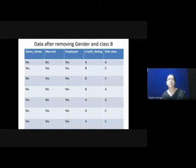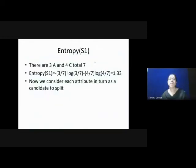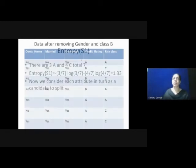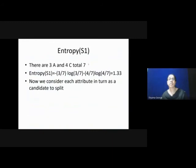The data after removing Gender and class B: class B is not included in the Risk class, and Gender is not included in the feature set. The remaining features are Ons, Married, Employed and Credit Rating, and the Risk class only contains class A and C. This data should be used to find out the next best split attribute. We will find out the entropy for this reduced data, which we consider as entropy S1. There are 3 records in class A and 4 records in class C, giving entropy S1 = minus 3/7 log₂(3/7) minus 4/7 log₂(4/7) = 1.33.